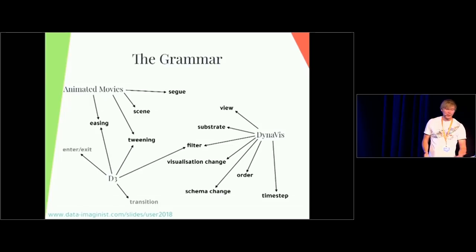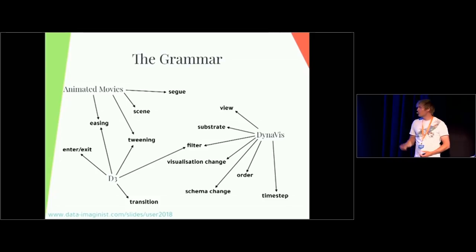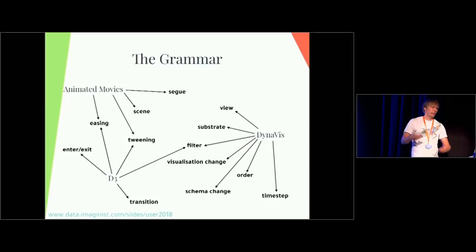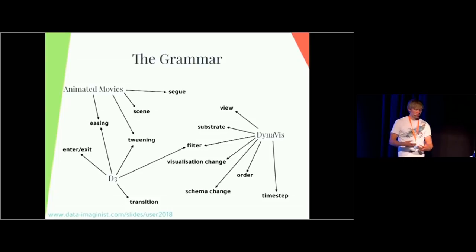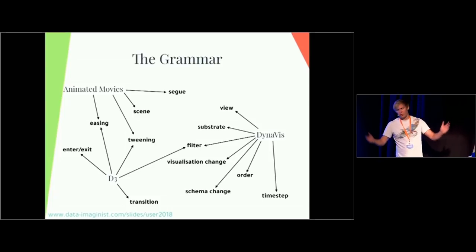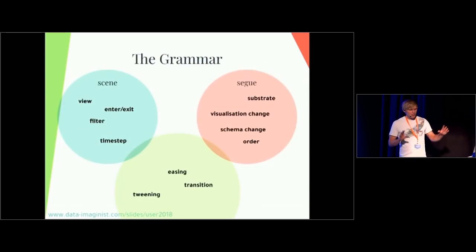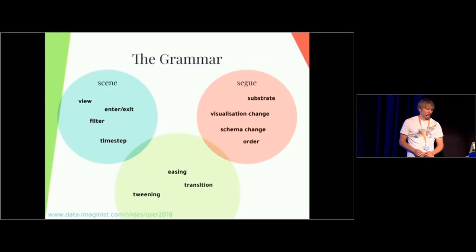D3 also takes from animated movies and Dynaviz — it takes the idea of easing and tweening, and adds ideas such as entering and exiting. When data is not apparent in one frame and suddenly appears — how should it appear, and how should it disappear? They also talk about transitions, which is the act of changing from one place to another. With all of these things, in my mind we can put them into two different specific areas: something called the scene, something called the segue, and then things that are relevant to both.